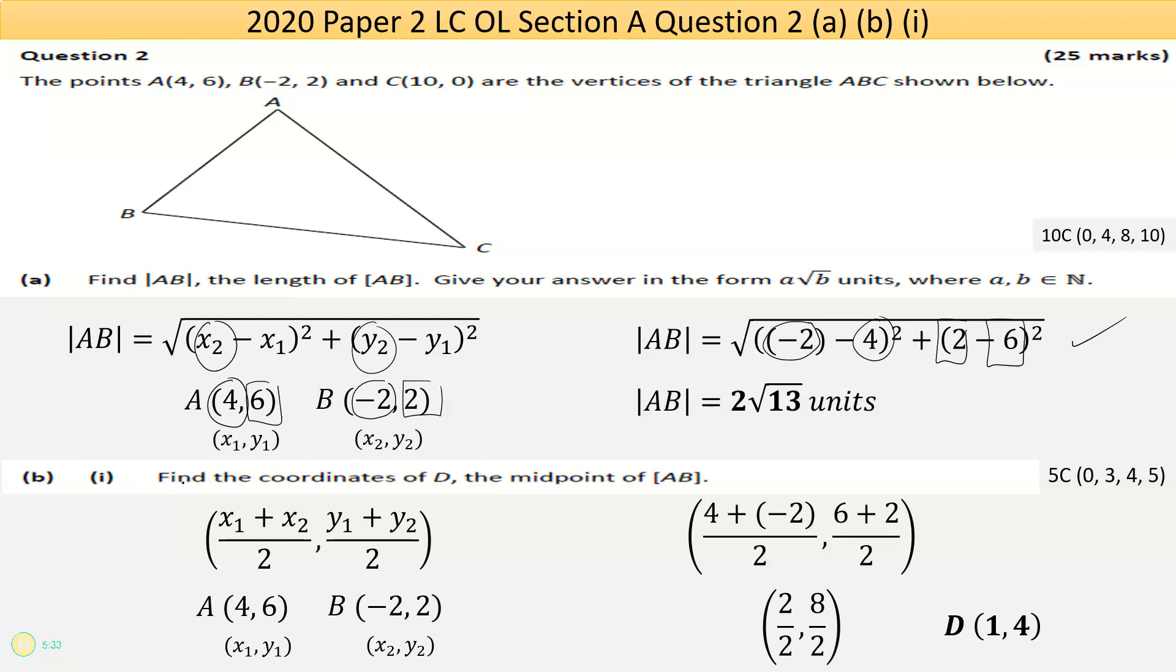Now part B, part 1, this is a midpoint. The midpoint formula is given to you in the math tables in the section of coordinate geometry. I have my two points labeled. All you're really doing here is getting the average of the x's. So x1 is 4, the x2 value is minus 2. 4 plus minus 2 is 2, and 2 over 2 is 1. You do the same thing for the y's. 6 plus 2 is 8 divided by 2 is 4.